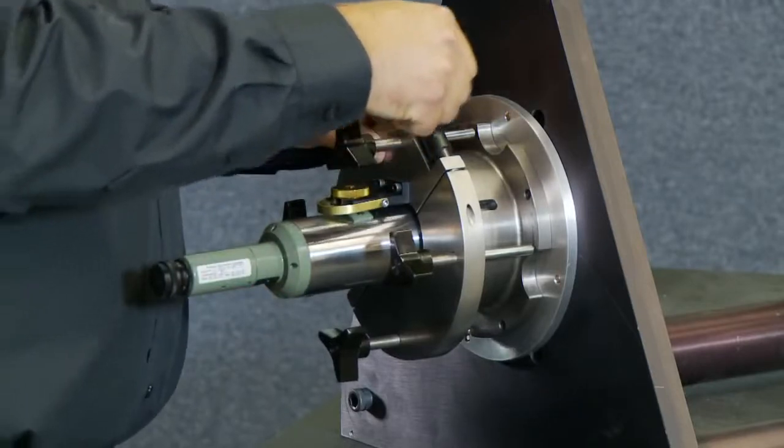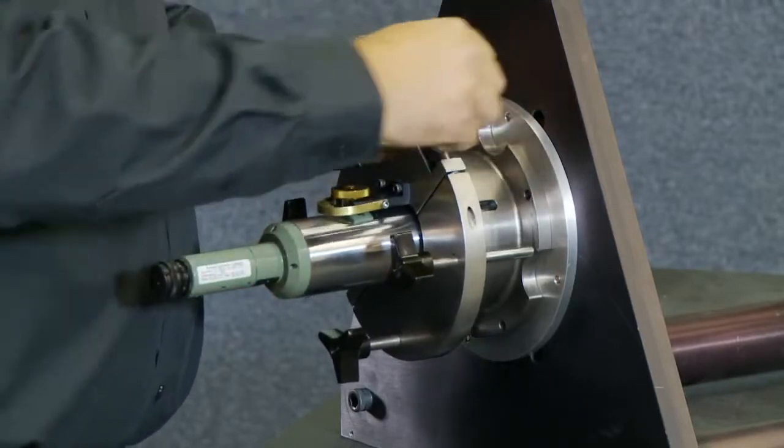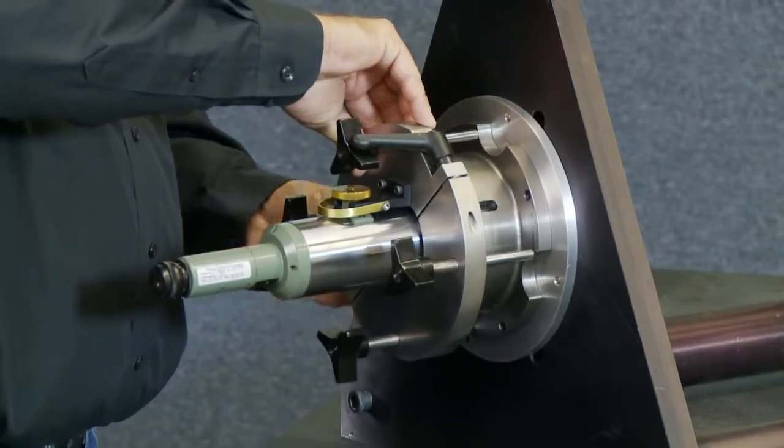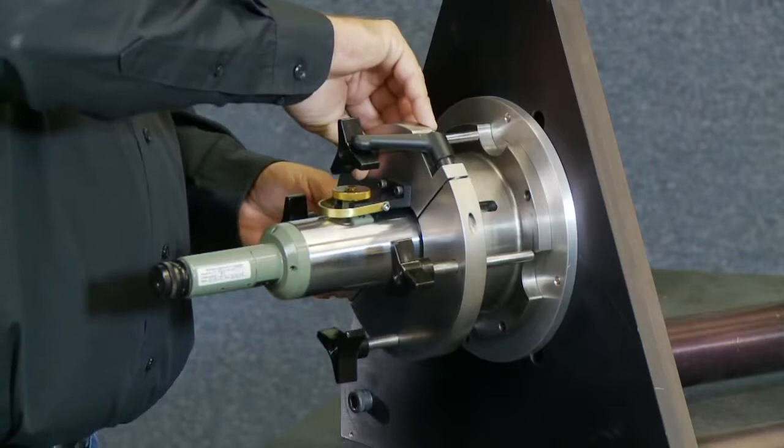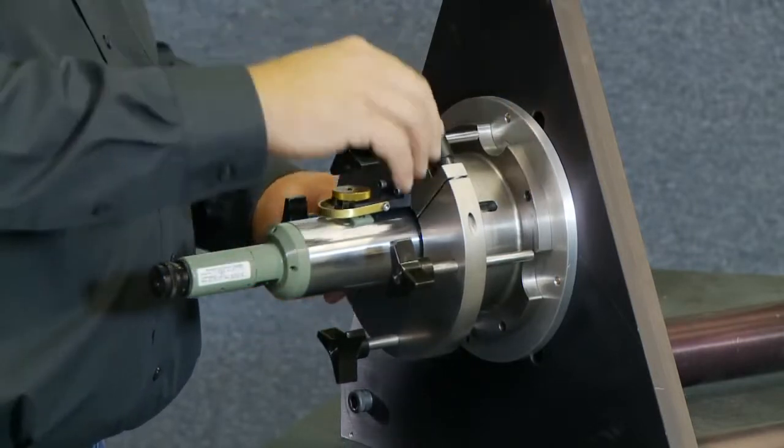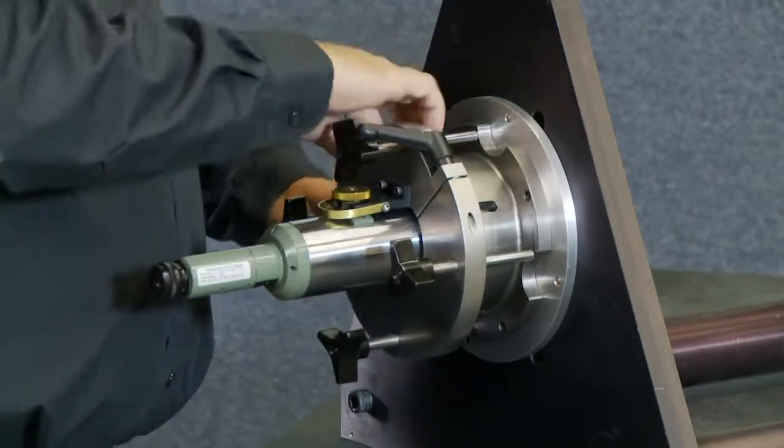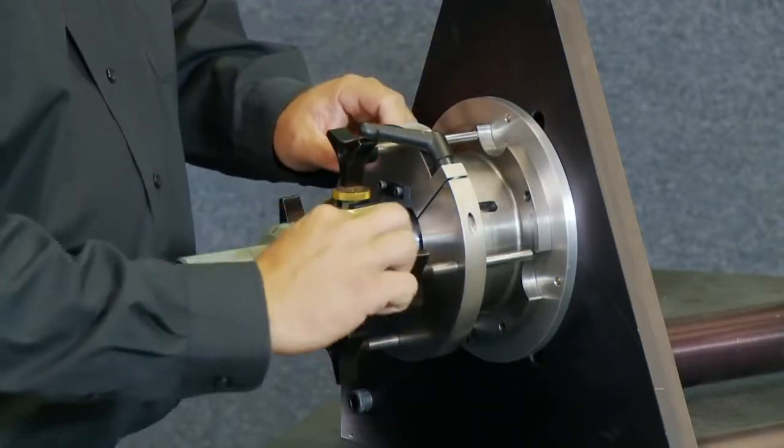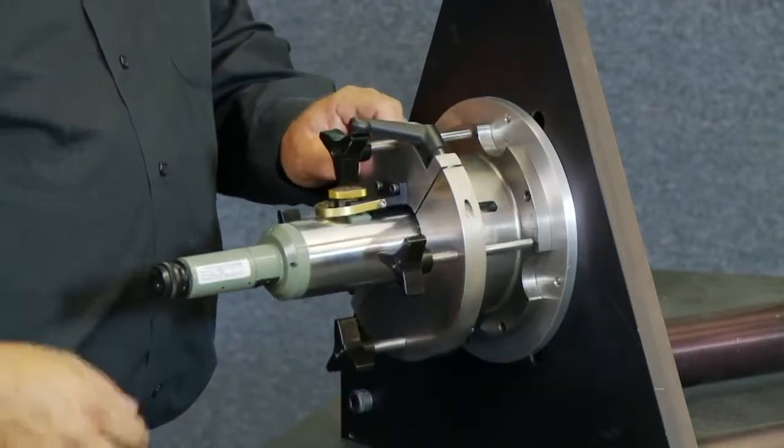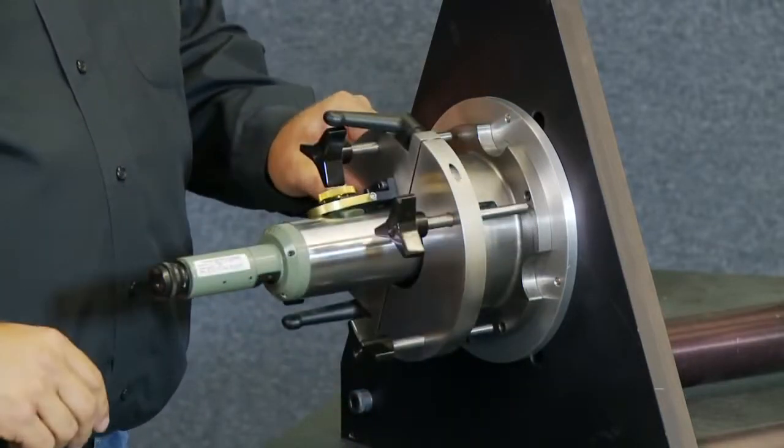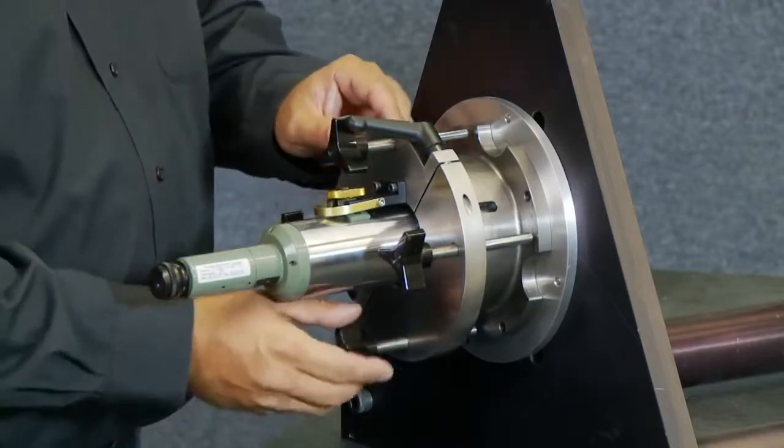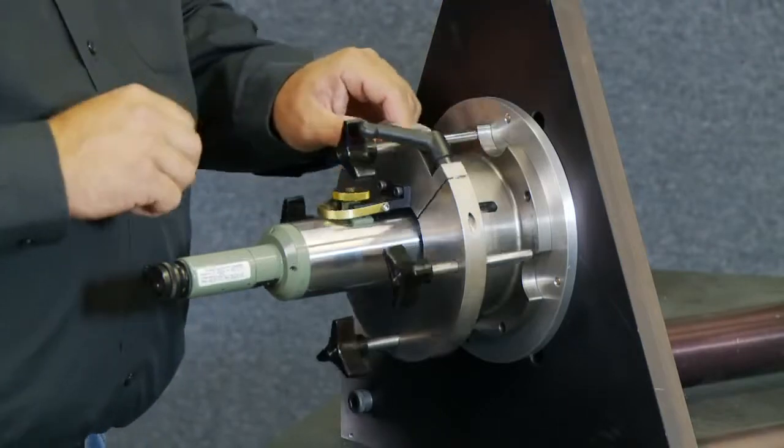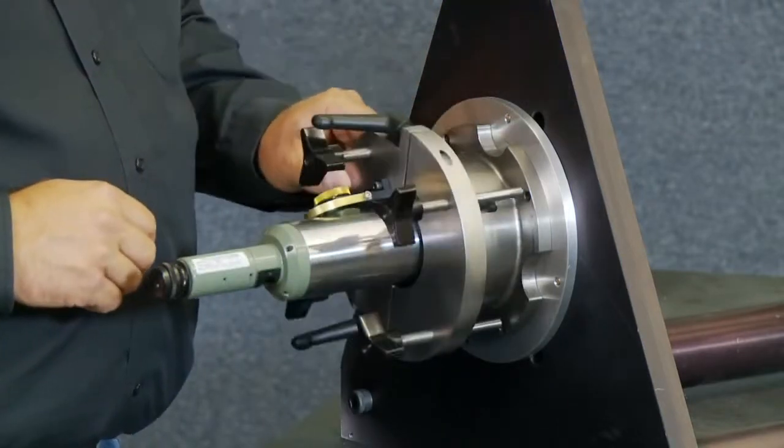From here, what we're going to do is with a couple more turns of the locking fixtures, one on each side, I'll demonstrate that the alignment scope itself can still rotate, meaning we're going to be able to orient it properly compared to how our target on the far side is going to be set up. So this allows it to still rotate freely.